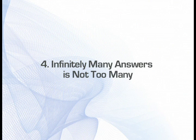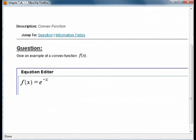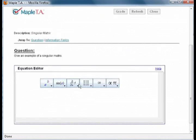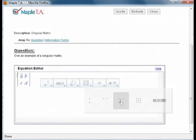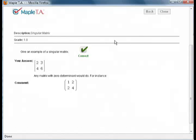Number 4. Infinitely many answers is not too many. Maple TA can go far beyond checking for mathematical equivalence. With Maple TA, you can ask open-ended questions that have several, hundreds, or even an infinite number of possible answers, and Maple TA will grade the response automatically.